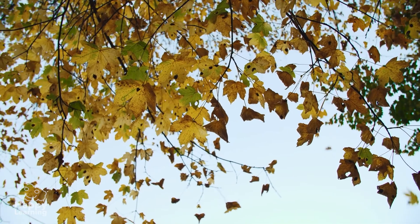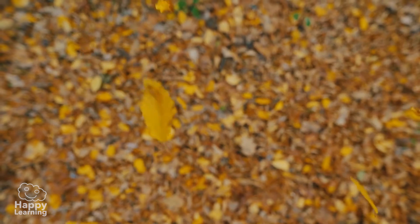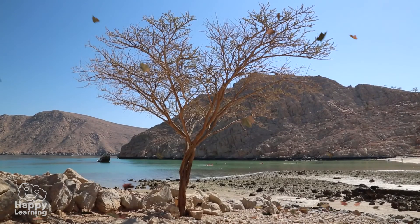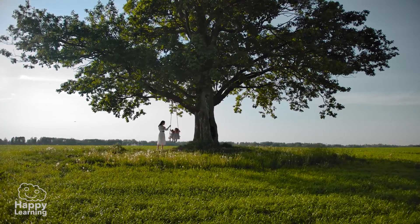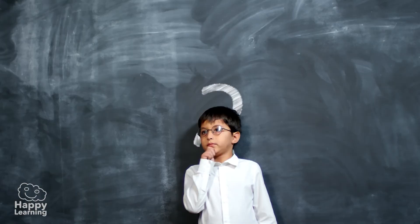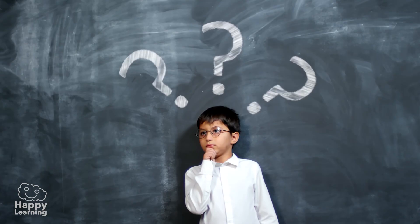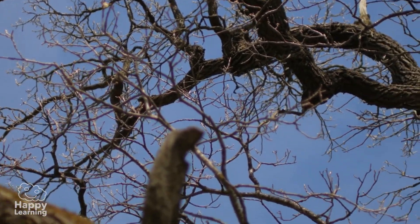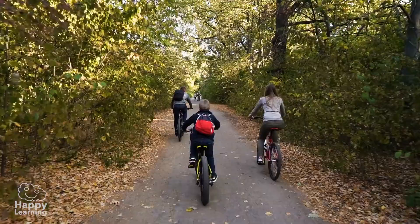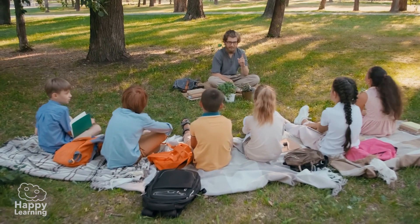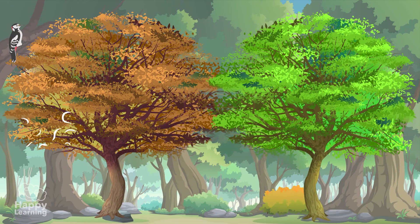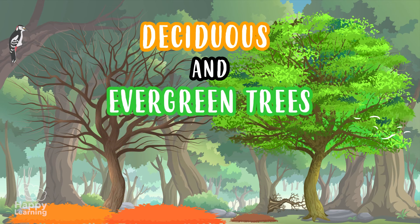Every year the same thing happens. With the arrival of autumn, some trees lose all their leaves. They become bare, like the ones you see here. Meanwhile, other trees never lose their leaves. Why does this happen? Why do some trees lose their leaves and others don't? Today we're going to find out. Today we're going to investigate all about deciduous and evergreen trees.